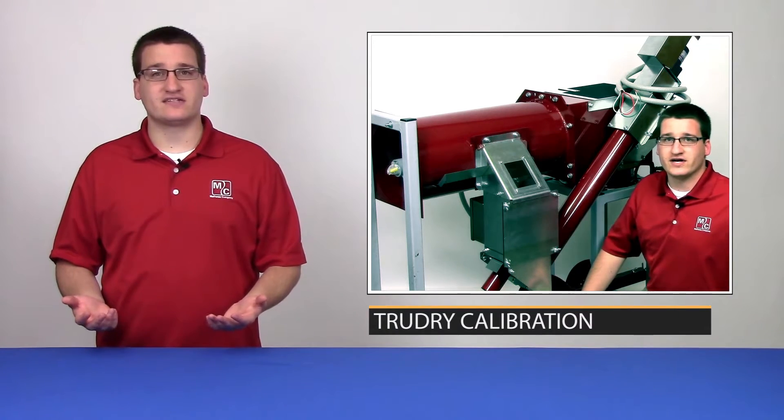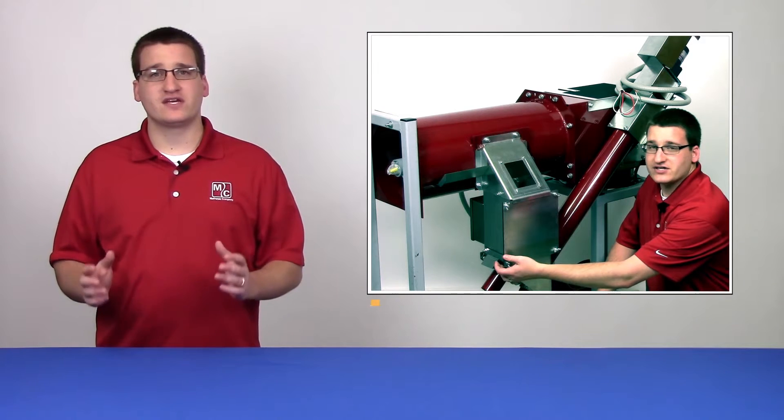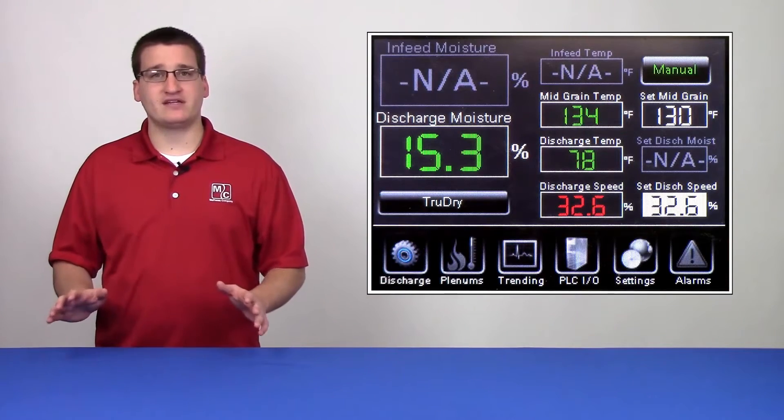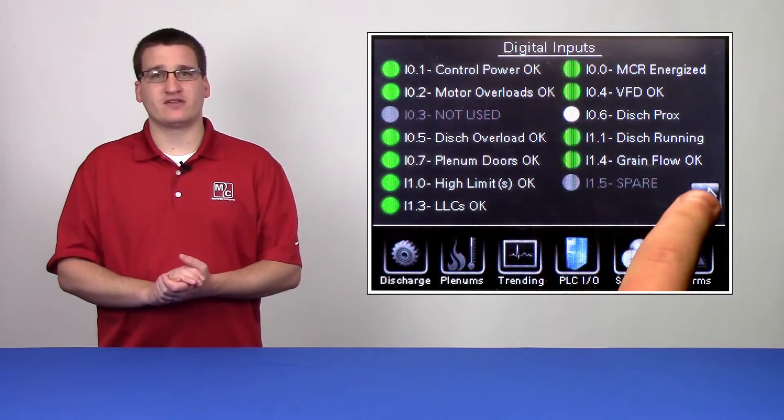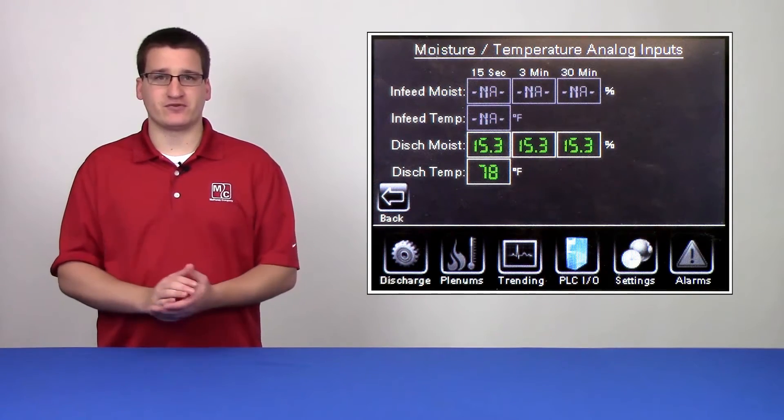Now that we've seen how to take a sample, let's walk through the calibration process. First, you'll have to go out to the dryer and take a good sample. Immediately following the sample, go over to your HMI, tap the PLCIO button on the ribbon, and hit the next button until you see moisture and temperature readings.